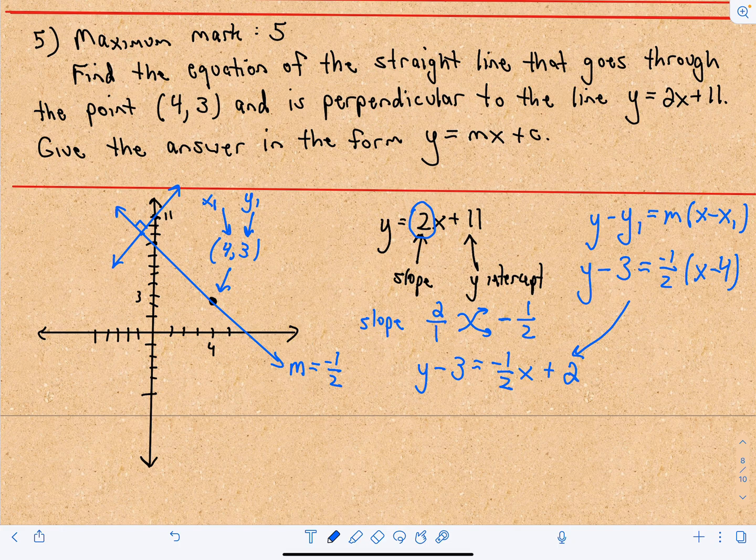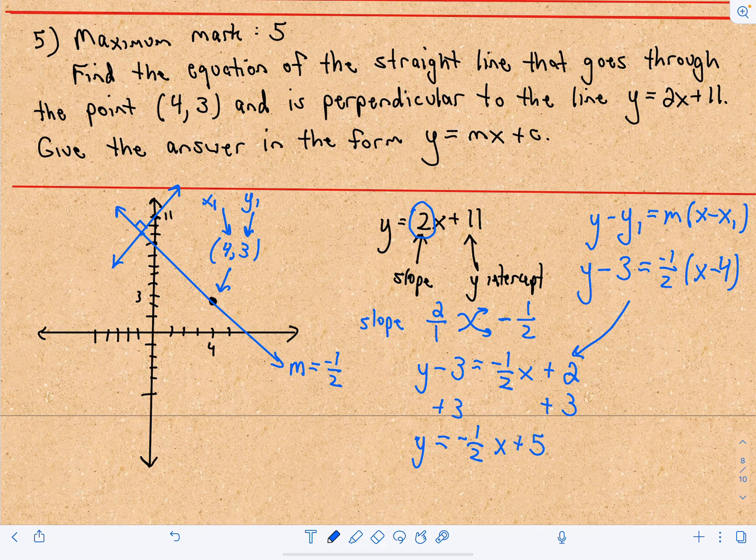And now we can simply add 3 to both sides. So we'll add 3 to both sides. And then we're just left with y equals negative 1 half x plus 5. And that's going to be our solution.